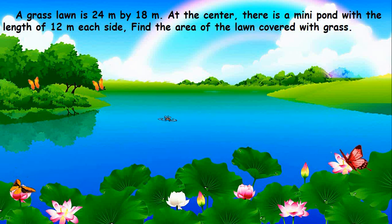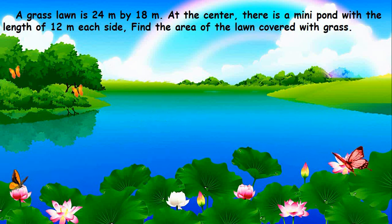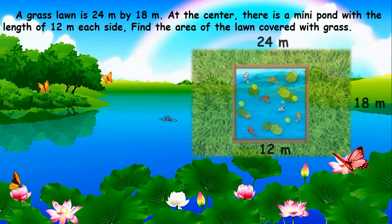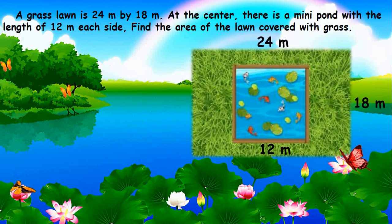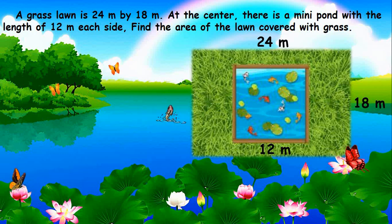An example: a grass lawn that is 24 meters by 18 meters. At the center, there is a mini pond with a length of 12 meters on each side. Find the area of the lawn covered with grass.